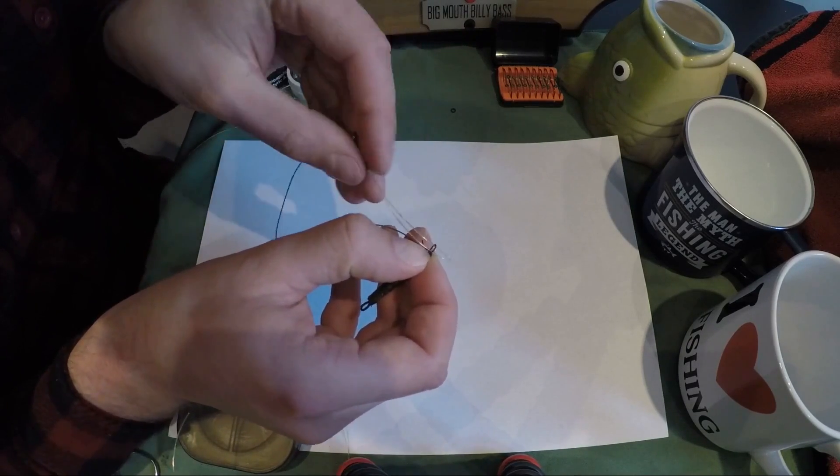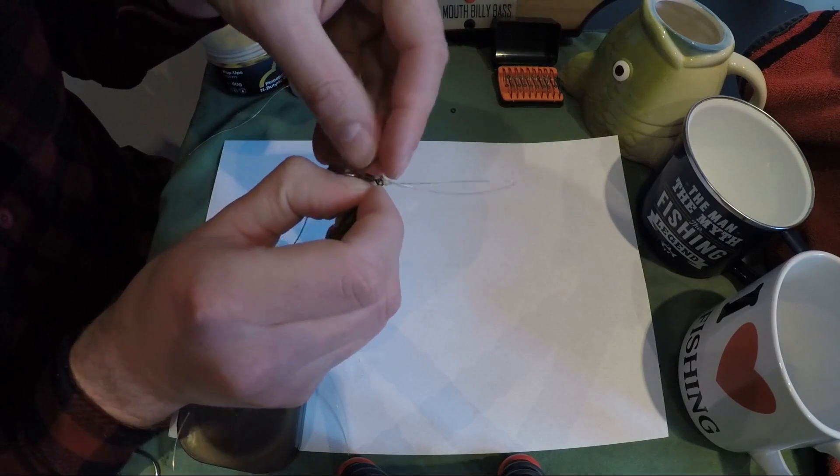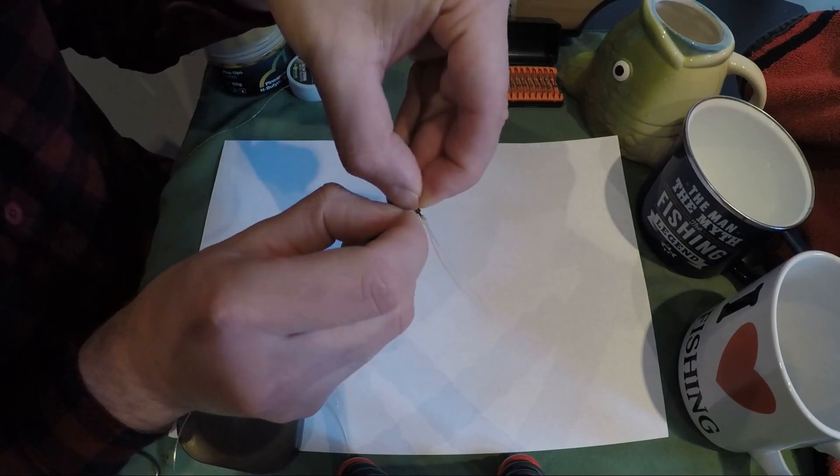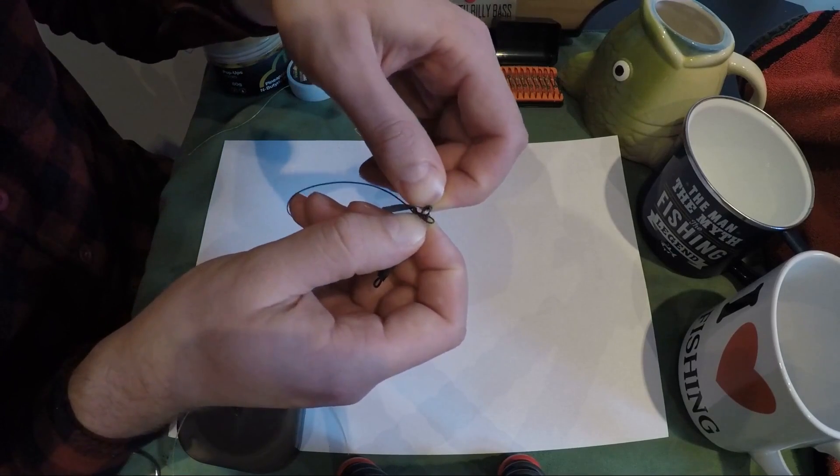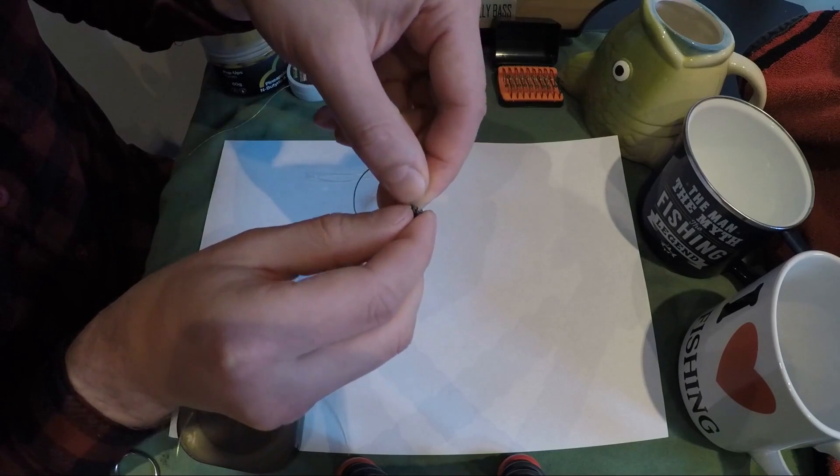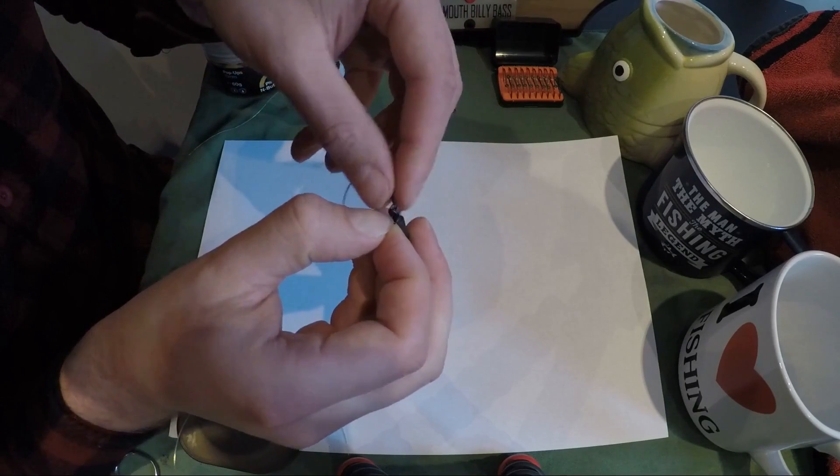Which might seem a bit silly, but the hook link at its most widest is that little ring there on the size 11 ring swivel, so it doesn't particularly matter. I can pull that through really easily. A slightly different way of doing the knot, but it's still very effective.